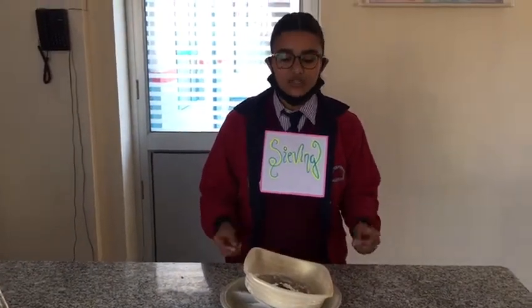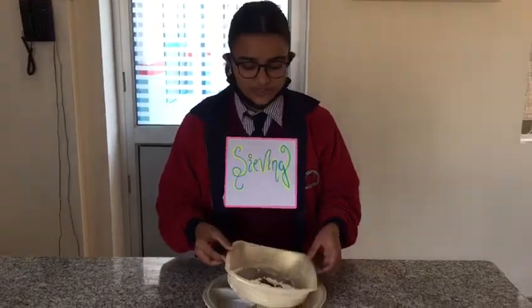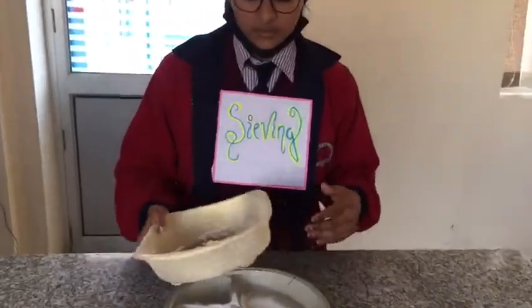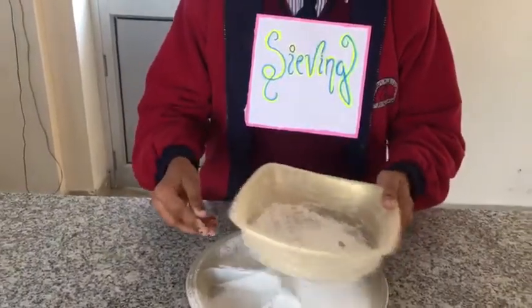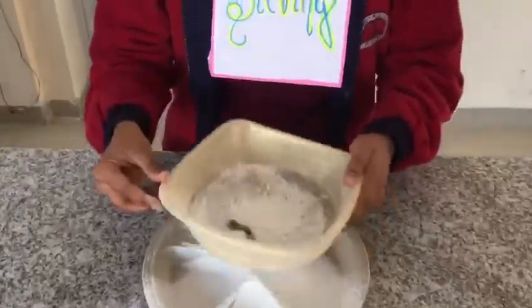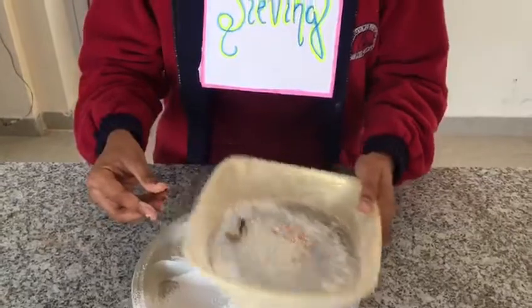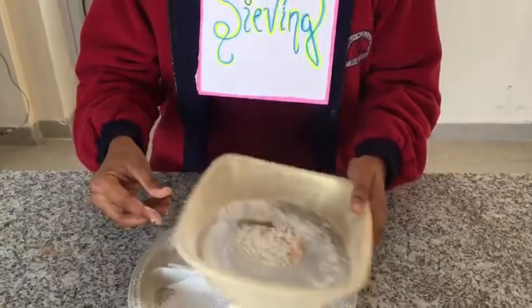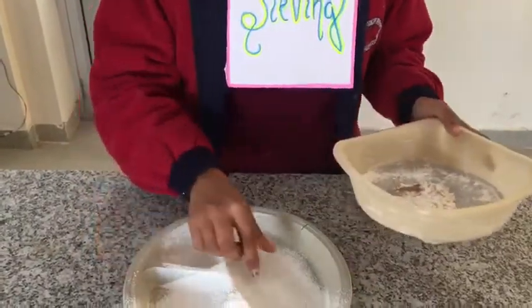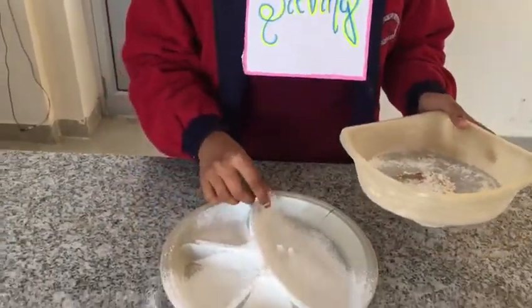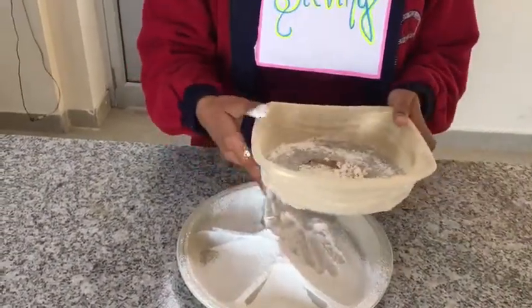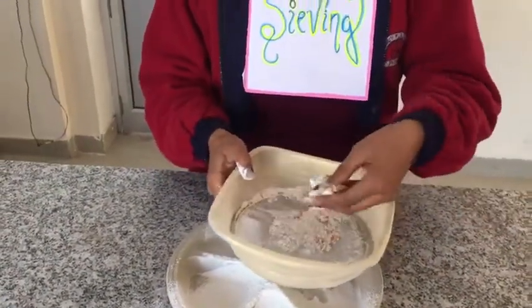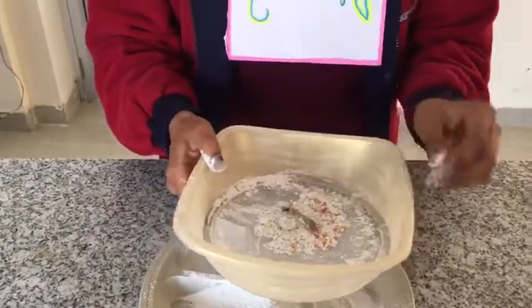In the process of sieving, the first thing which we have to do is take a sieve and after that we have to prepare it. Then after that we have to shake it with our hands so that all the impurities like husk and stones will remain on the sieve.